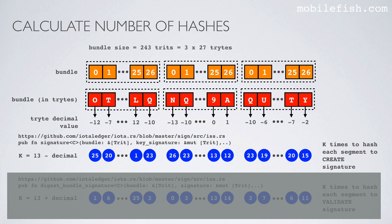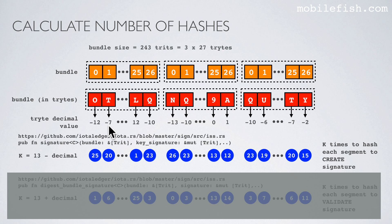What is happening inside the transformation function is the following. We take the bundle which consists of 243 trites — that is the same as 3 times 27 trites. Here are 27 trites, here are 27 trites, and here are another 27 trites. Now we convert each trite to its decimal value and then we do this calculation: 13 minus the decimal value. So 13 minus minus 12 is 25, 13 minus minus 7 is 20, etc. These values are used to hash each segment to create the signature, which will be explained in the next slide.